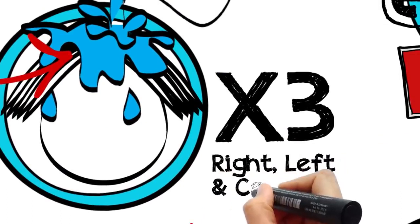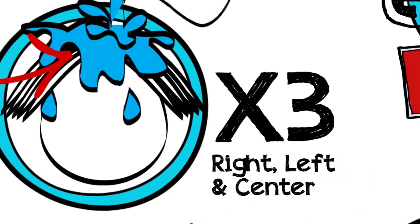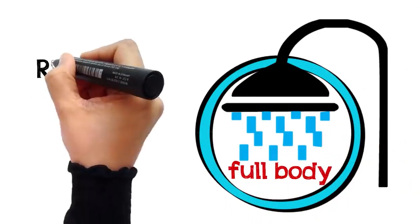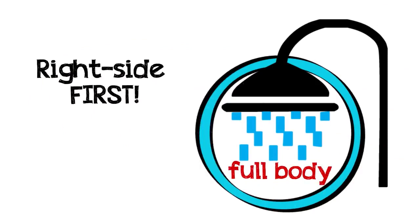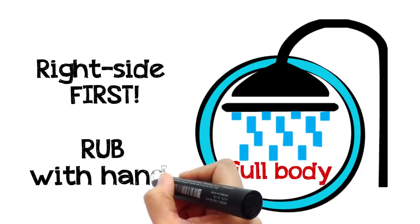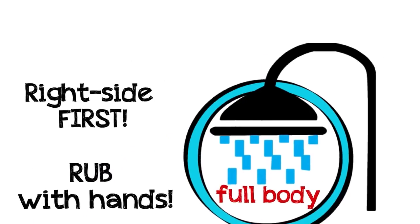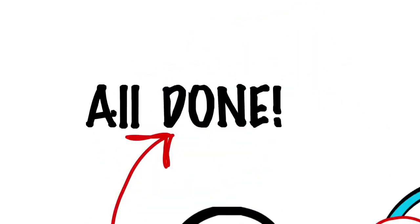Then pour water and wash the entire body, beginning with the right side, then the left, while rubbing it with your hands so that you are sure you haven't missed any part. So these are the etiquettes of the complete ghusl.